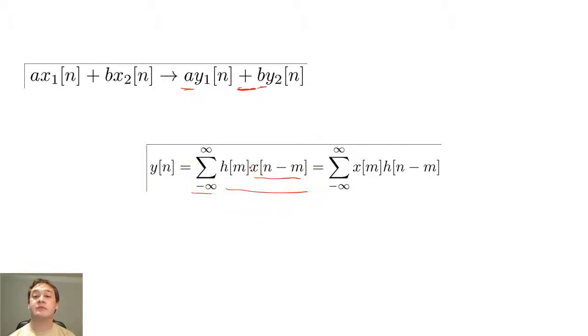If the superposition property did not hold for the system, we cannot appropriately recombine these parts.